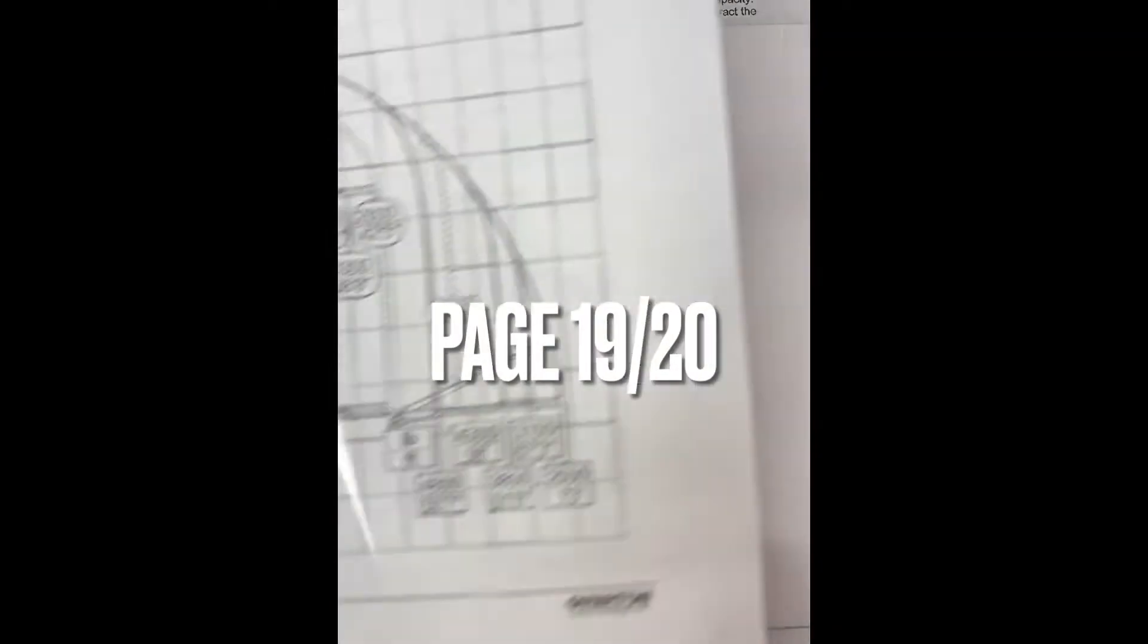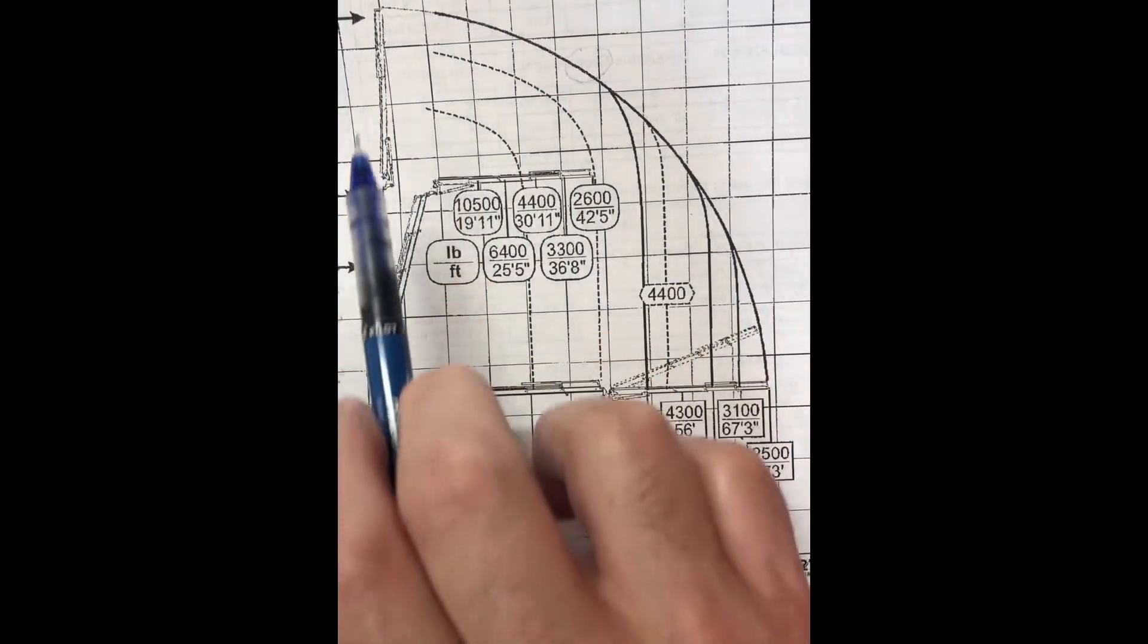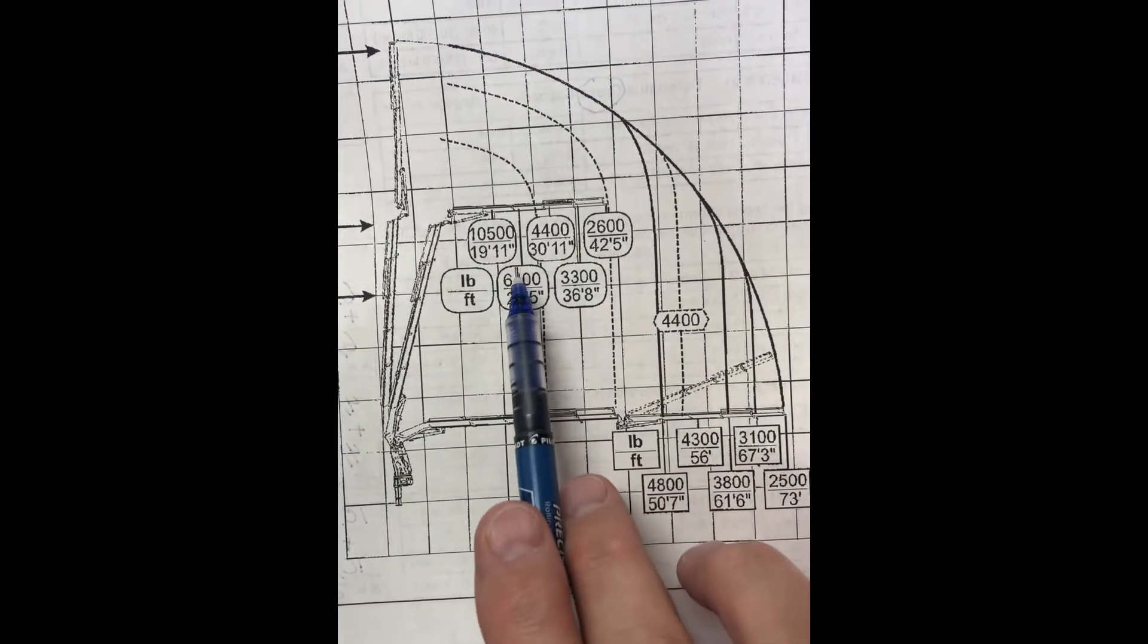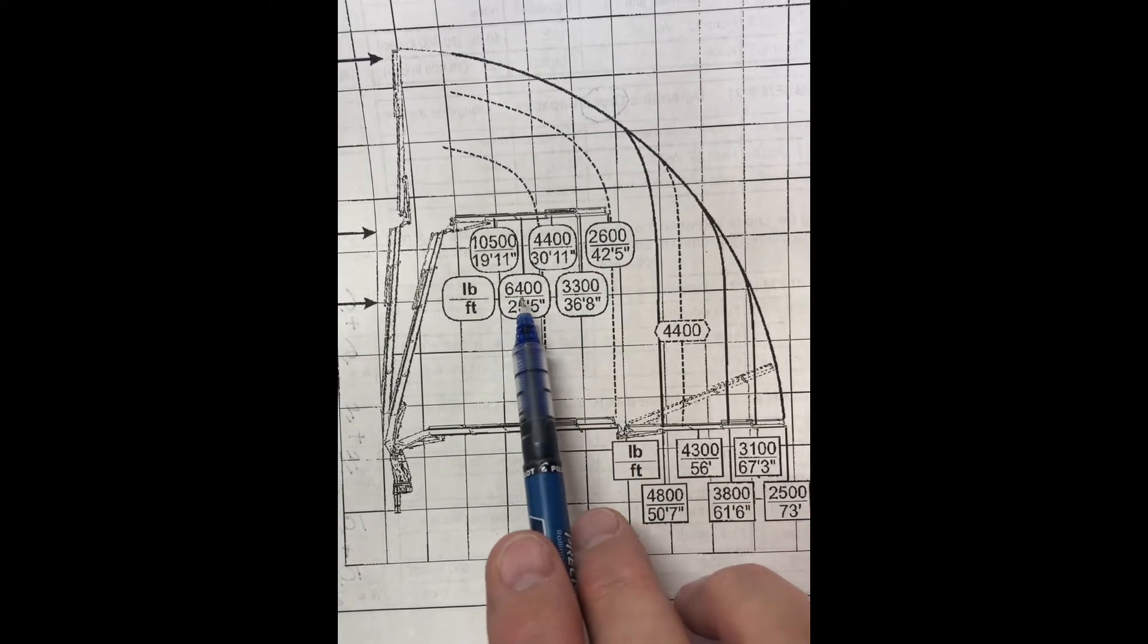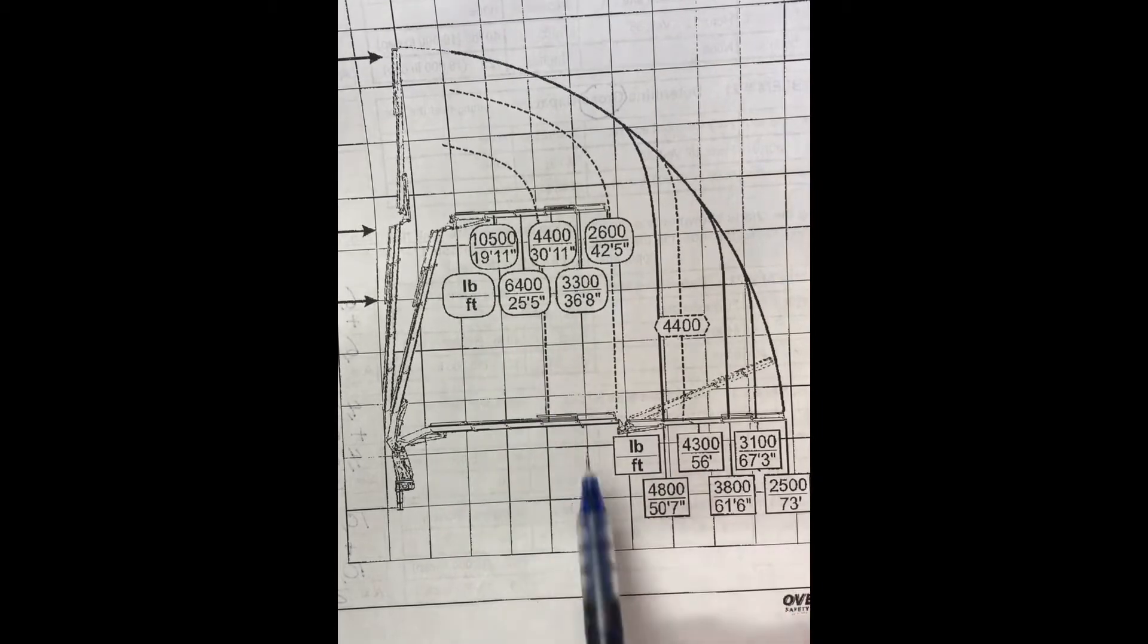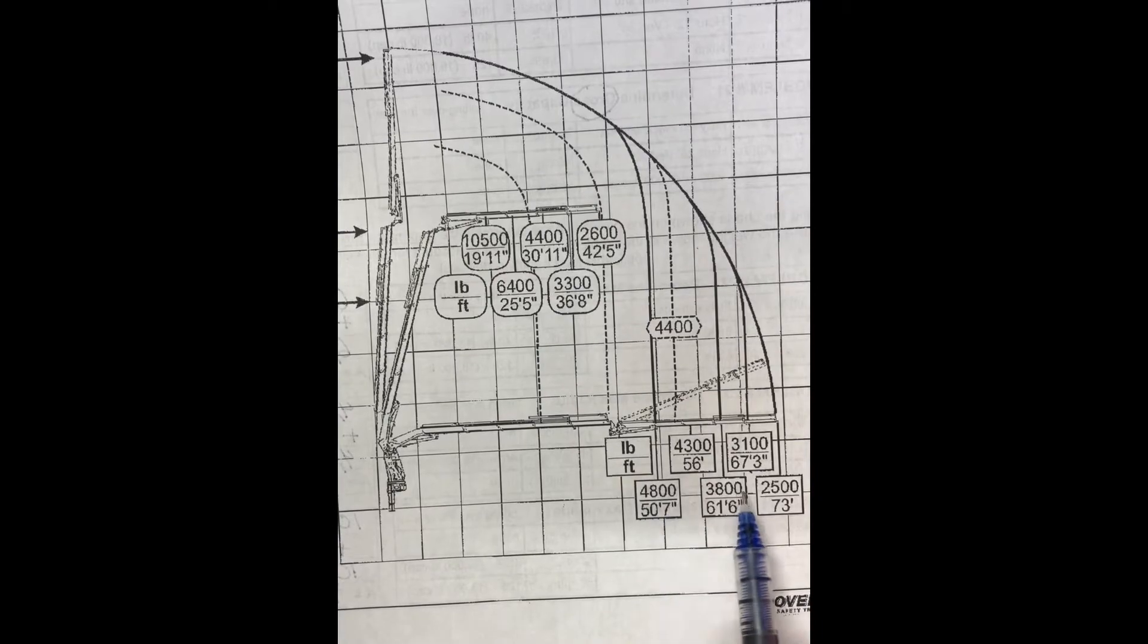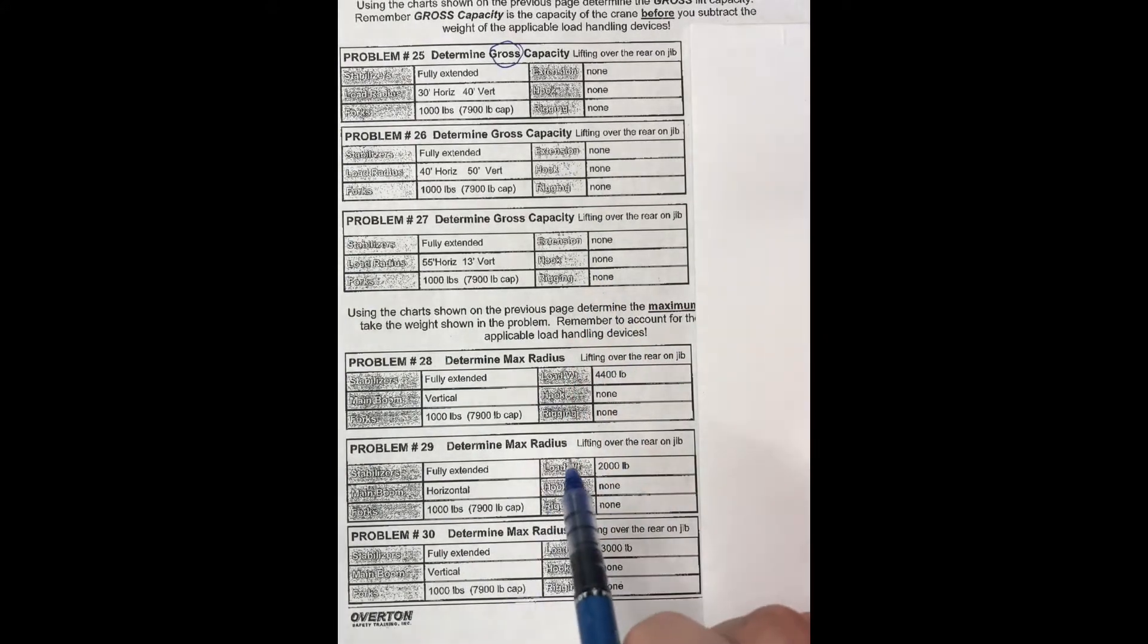Alright, here we have a little bit of a different chart. We've got a horizontal chart and a vertical chart. We've got some information here and bubbles with lines that extend up. We've got max capacities and max radiuses. Same with down here. So we've got some easy gross capacities to figure out first so you get used to this chart.